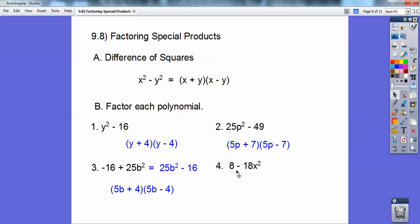On this one, I can pull a 2 out. So if I pull a 2 out of those, then it gives me a difference of squares. The square root of that's 2, square root of that is 3x. So 2 plus 3x, 2 minus 3x. Don't forget your GCF, your 2 that you pulled out.